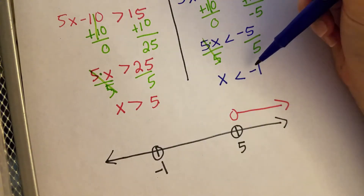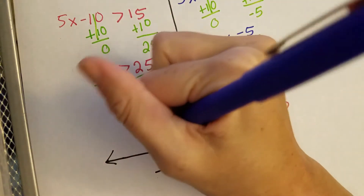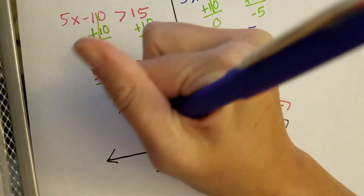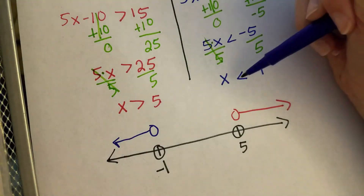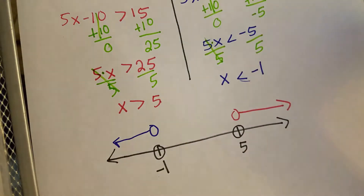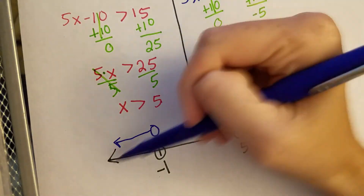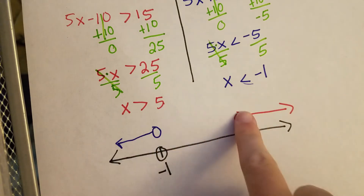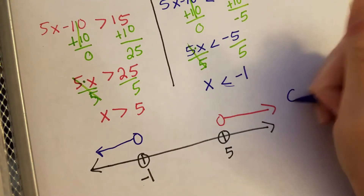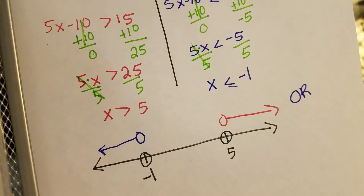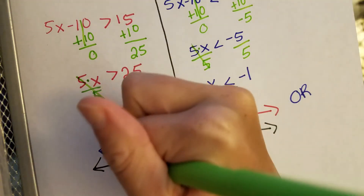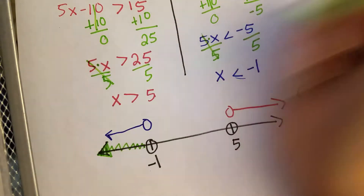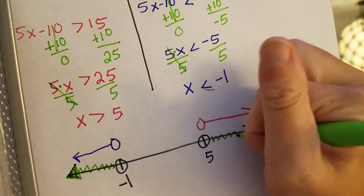On the other inequality, X is less than negative 1, so the numbers where X is less than negative 1 are on the left side — the arrow points left. The arrows did not crash or collide; we have little bird wings pointing outward, which makes this an 'or.' Since they didn't collide, I just shade where the arrows currently are — I shade outward on both sides.